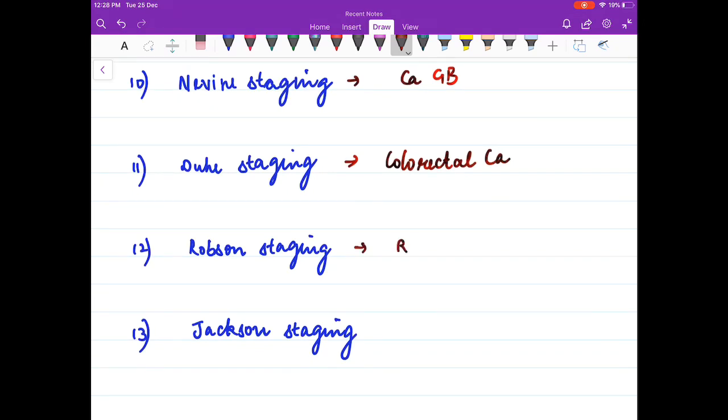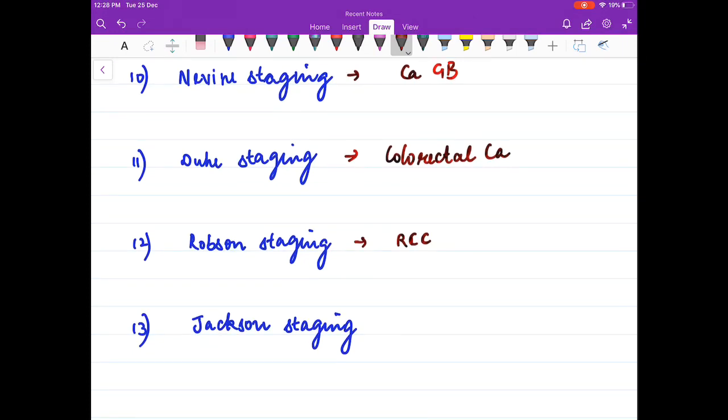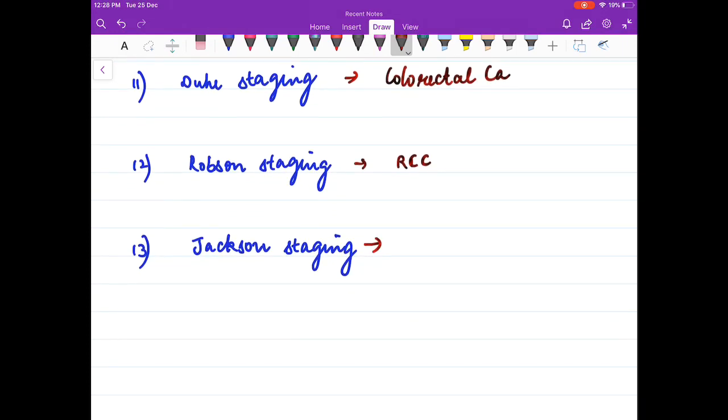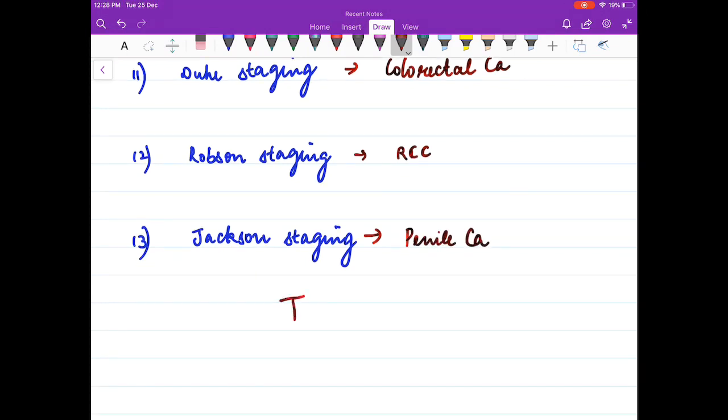Robson staging is used for renal cell carcinoma and Jackson staging is used for penile carcinoma.